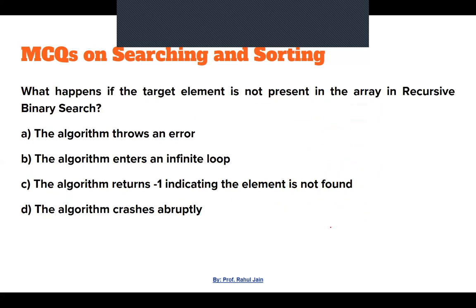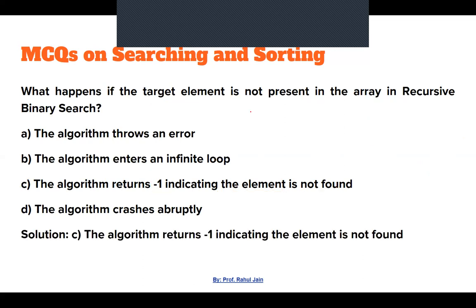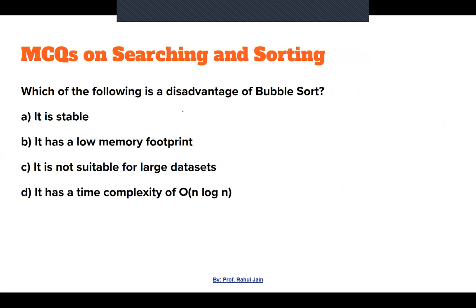Next: What happens if the target element is not present in the array in recursive binary search? It will halve the search space each time, checking left or right. At the last iteration, if the element is not found, the algorithm will return −1 and indicate element not found. Option C is the correct answer.